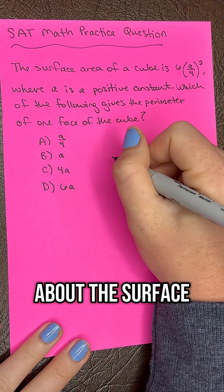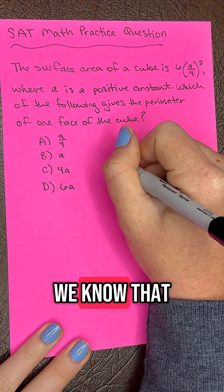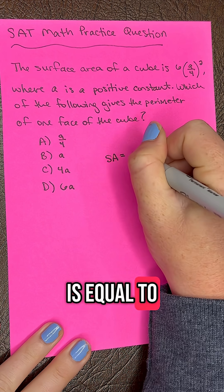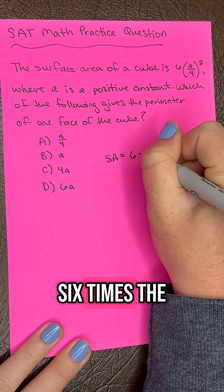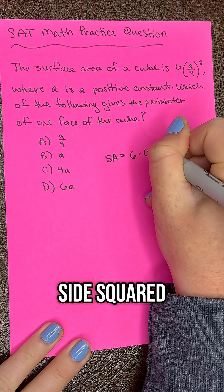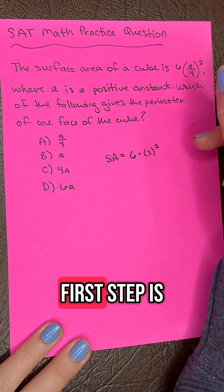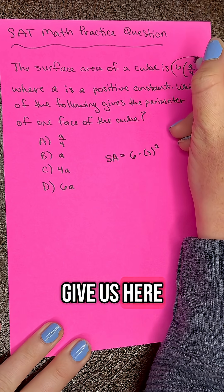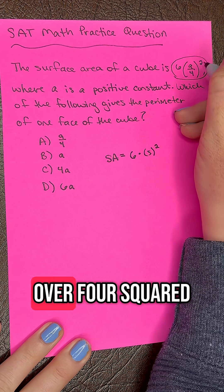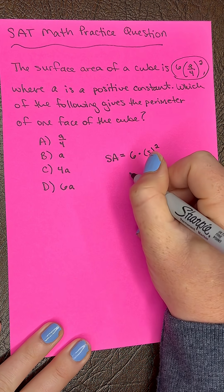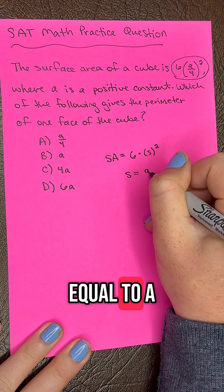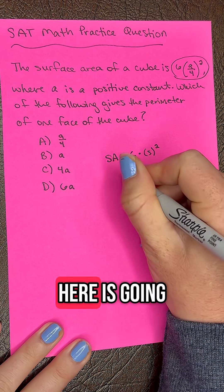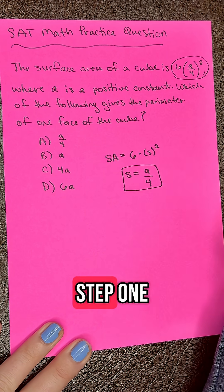So first we need to think about the surface area formula. We know that the surface area of a cube is equal to 6 times the side squared. The first step is to recognize that in what they give us here, 6 times (A/4) squared, the side is going to be equal to A/4. So this right here is step 1.